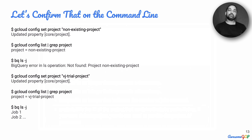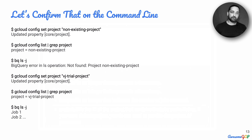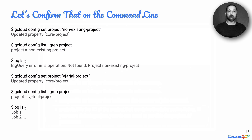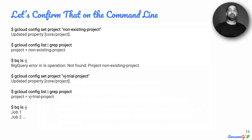Let us confirm that on the command line for gcloud. In command 1, we use gcloud config set project and give a non-existing project with no jobs. When we list the config properties using gcloud config list and grab the project, you can see the project is set to that non-existing project. When we do bq ls -j to list the jobs, we get an error because that project doesn't exist. Now having unset everything, we use gcloud config set project with a real project, and when we do bq ls -j, it automatically picks up the default project and shows the jobs.